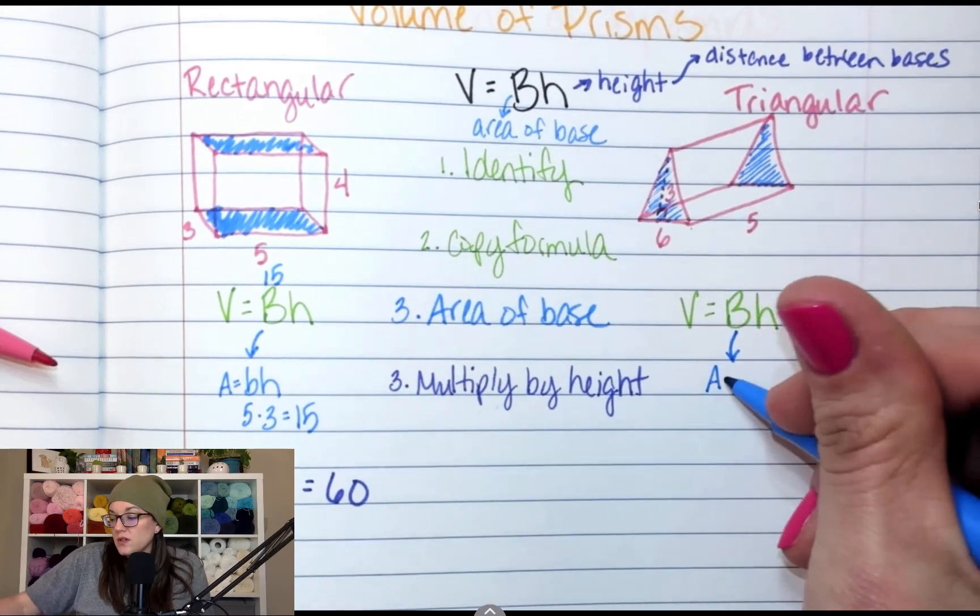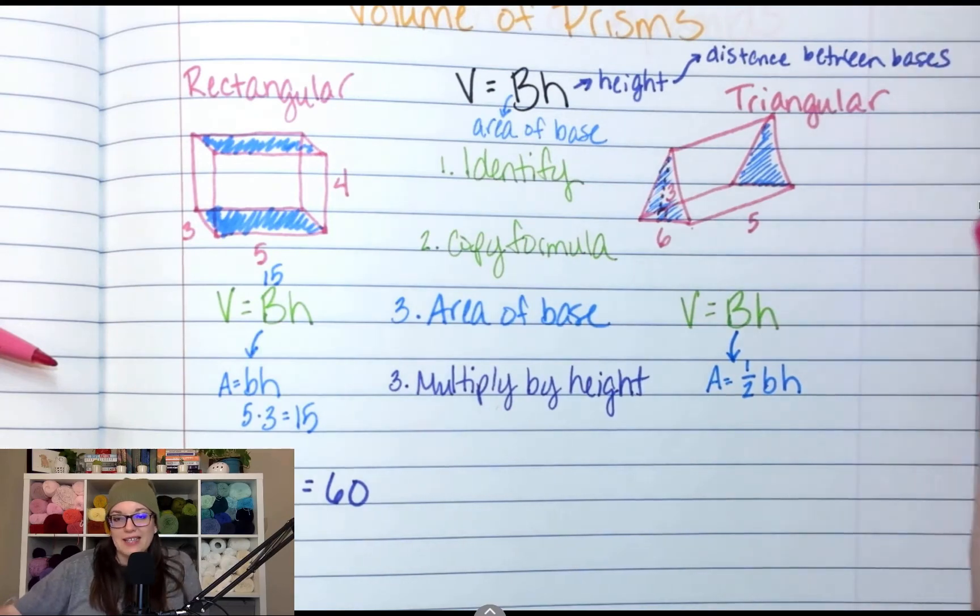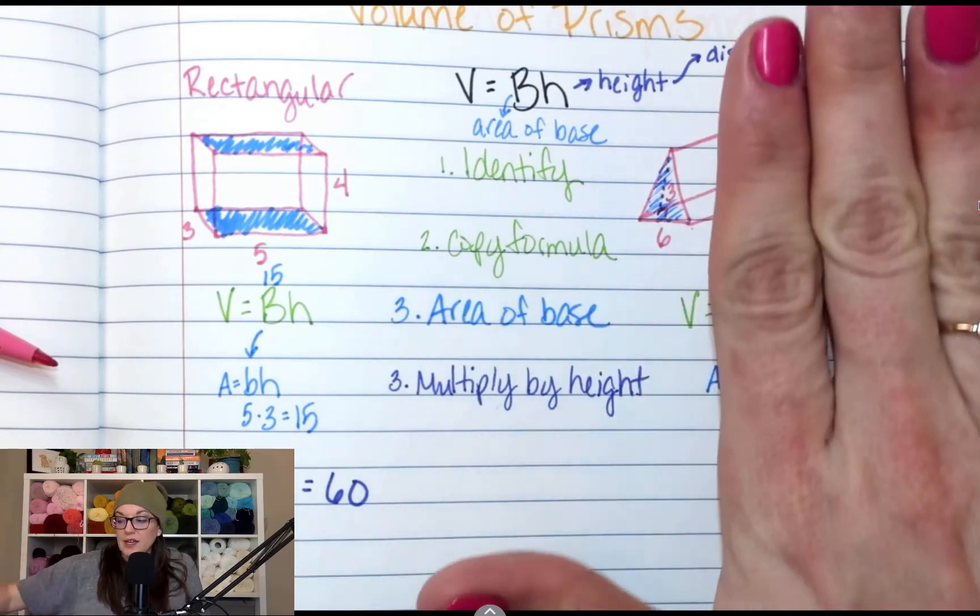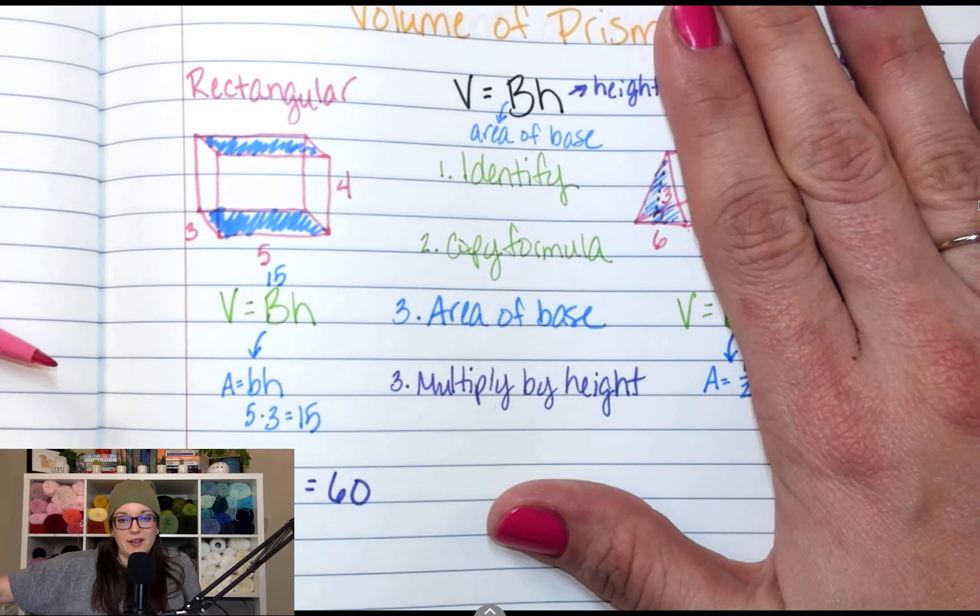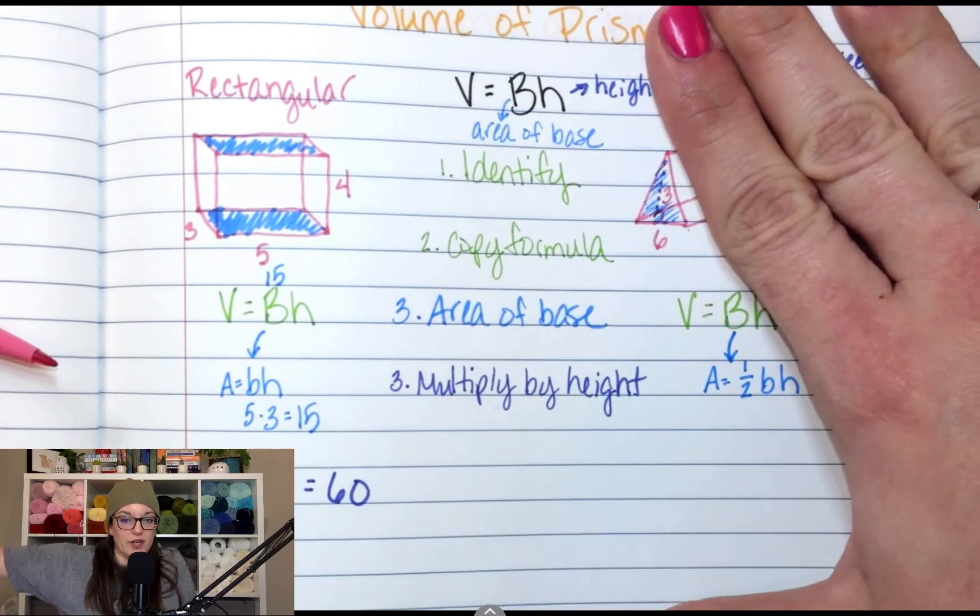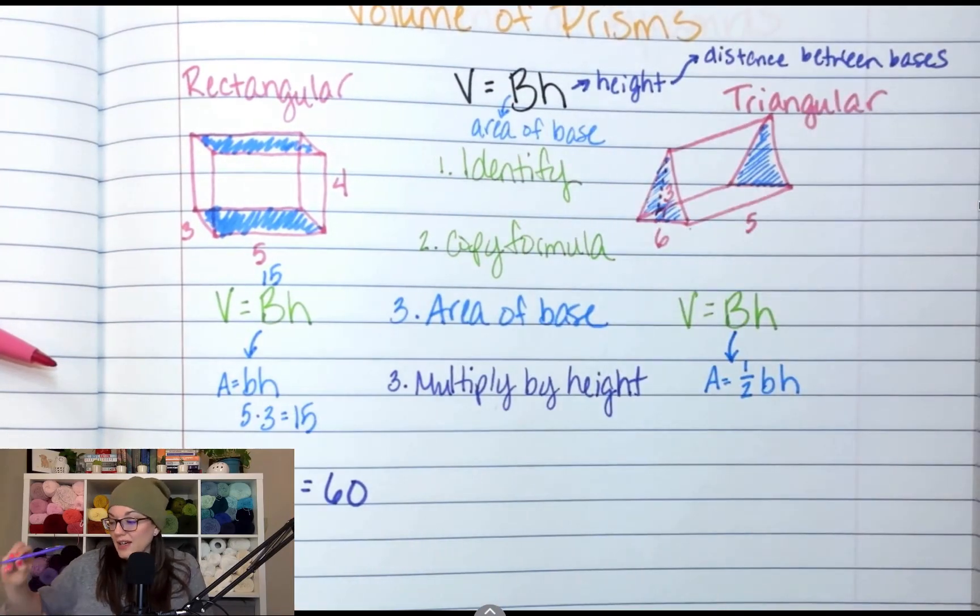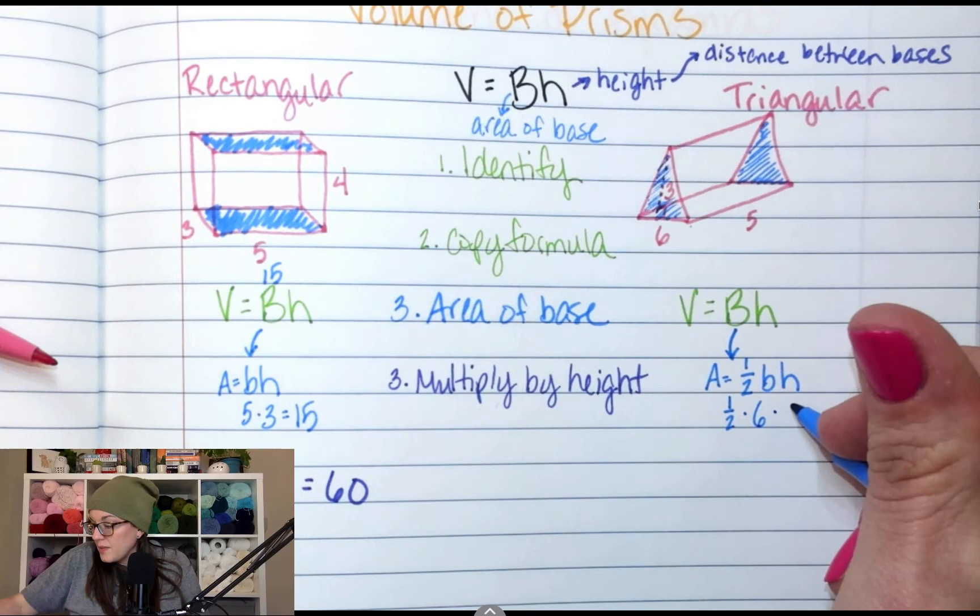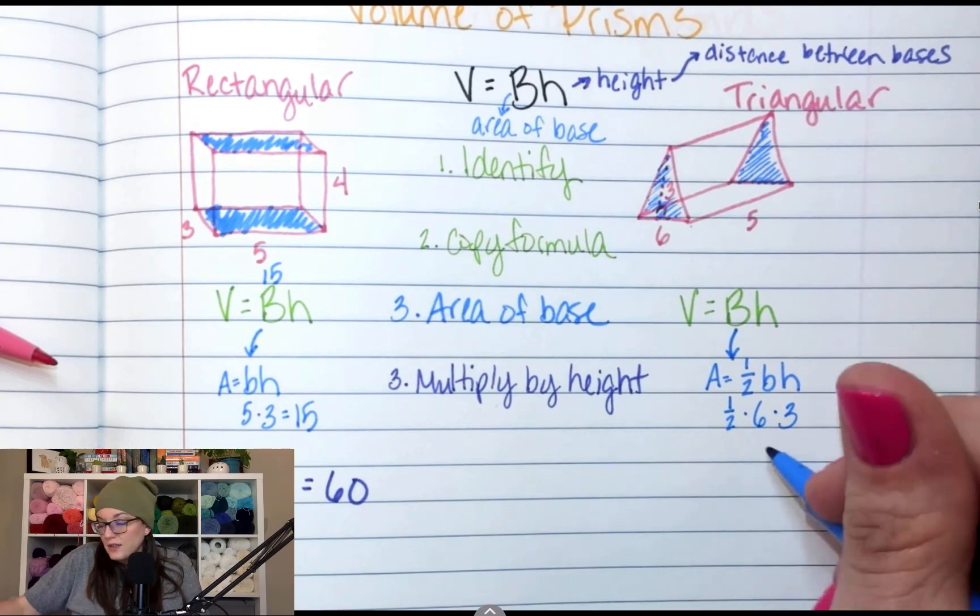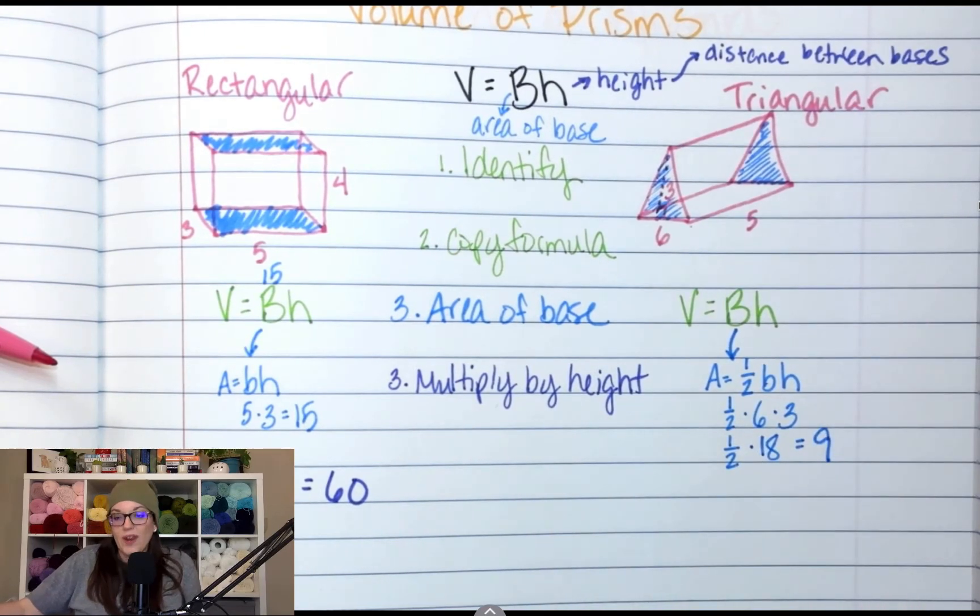A equals one half BH. Now what is the base and height of this triangle? I recommend take your hand and cover up the part of the triangle that's not the triangle. What is the base and the height of this triangle? It's six and three. What is the area? Remember, there's our area formula. What is the area of that triangle? Nine, because area of the base, I've got one half times six times three. And that was 18. And one half of 18 is nine. One half of 18 is nine.